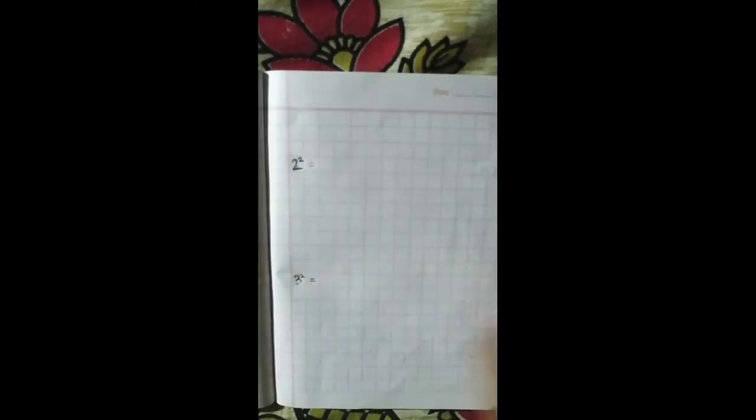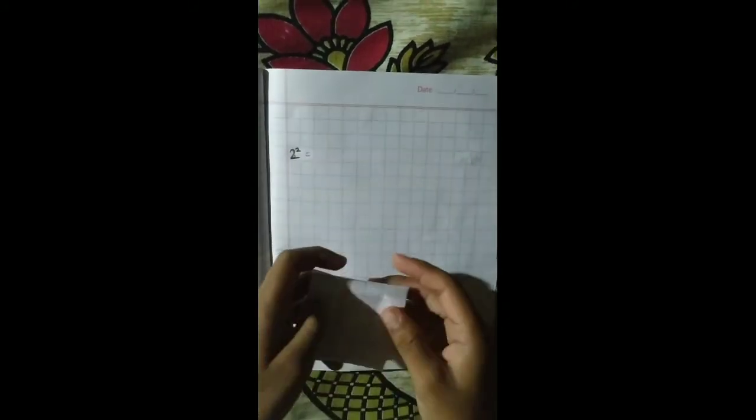So at first, we will find the square of 2. To find the square of 2, we should fold the square shaped paper 2 times. 1 and 2.